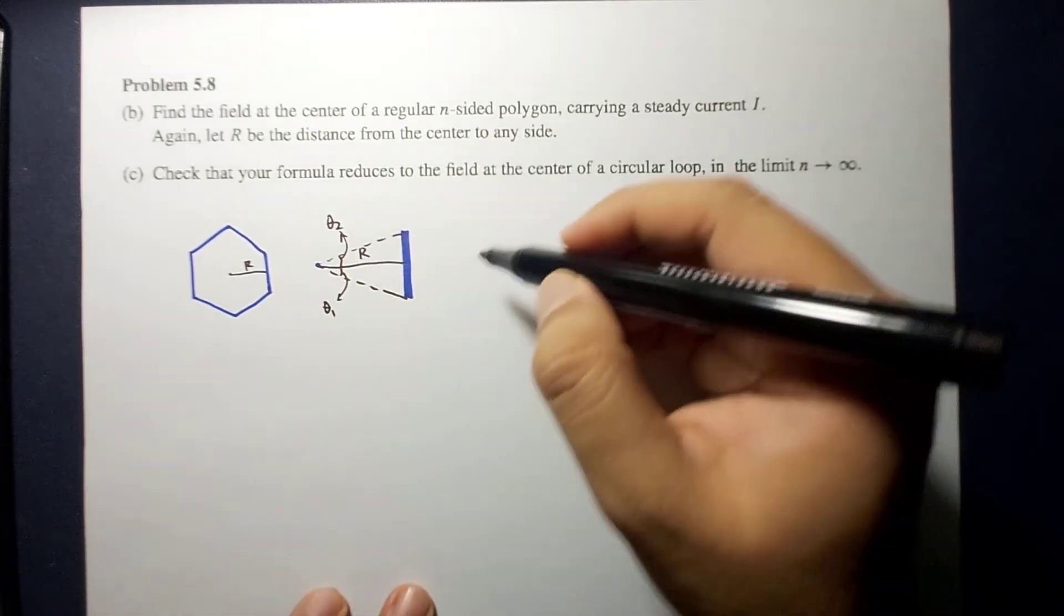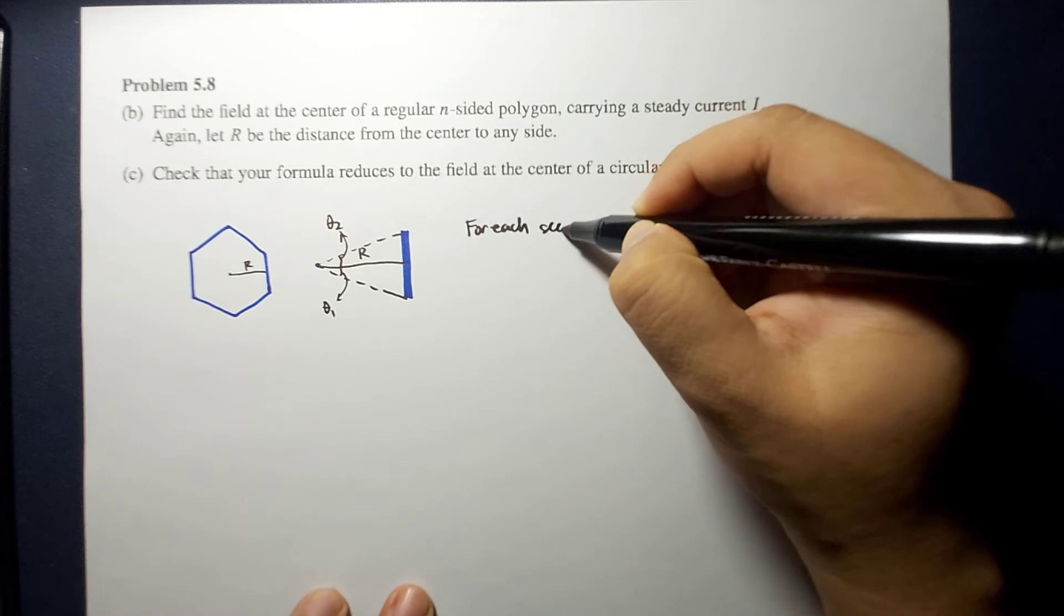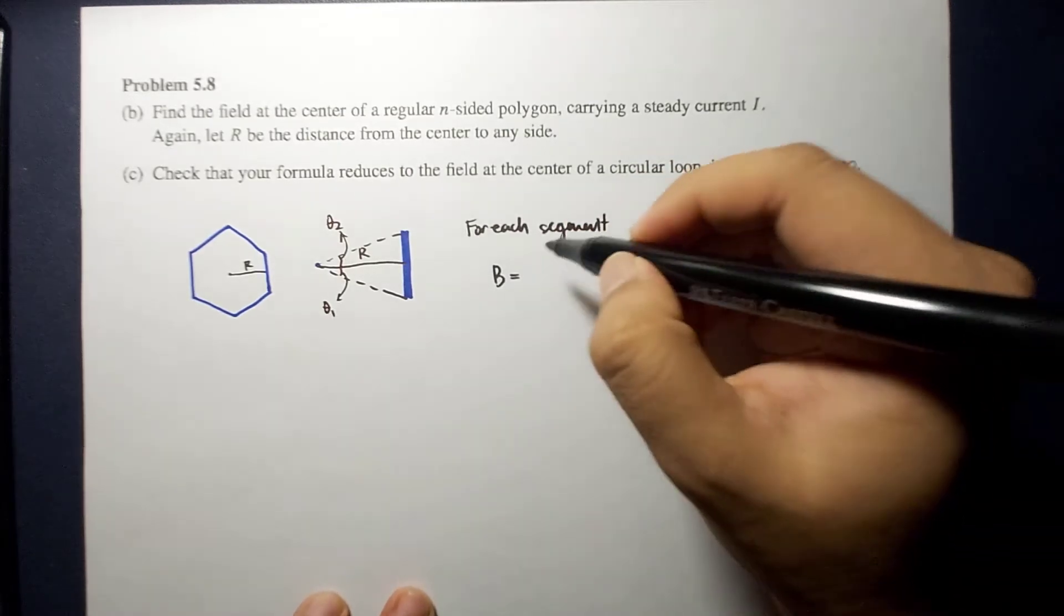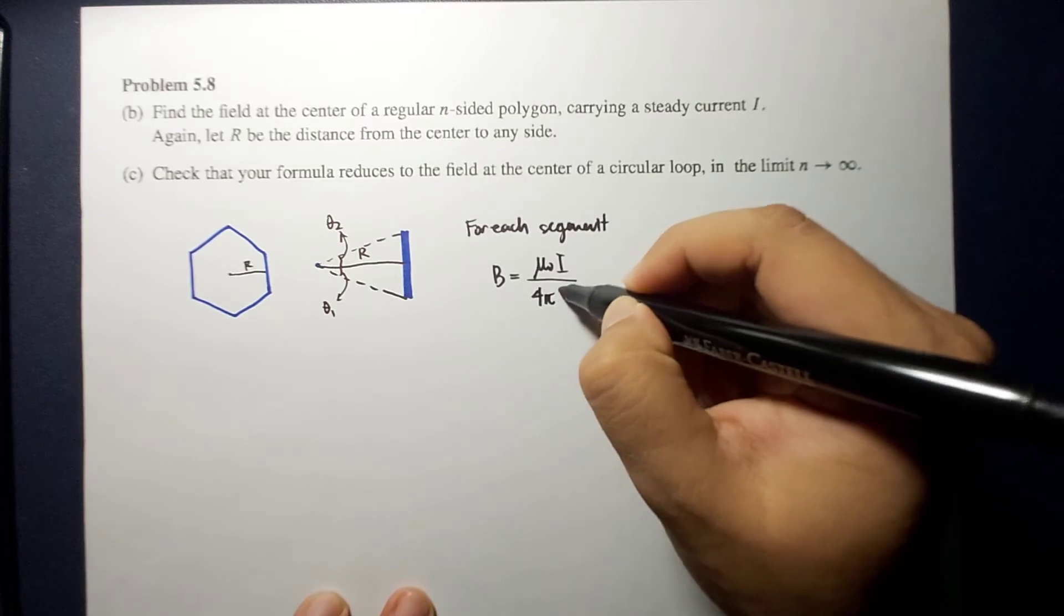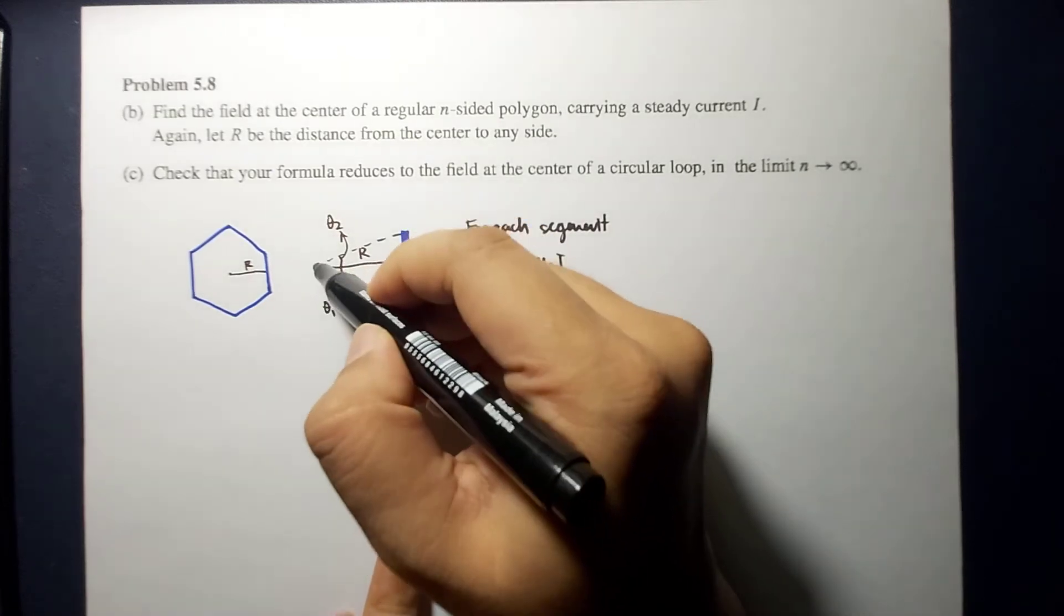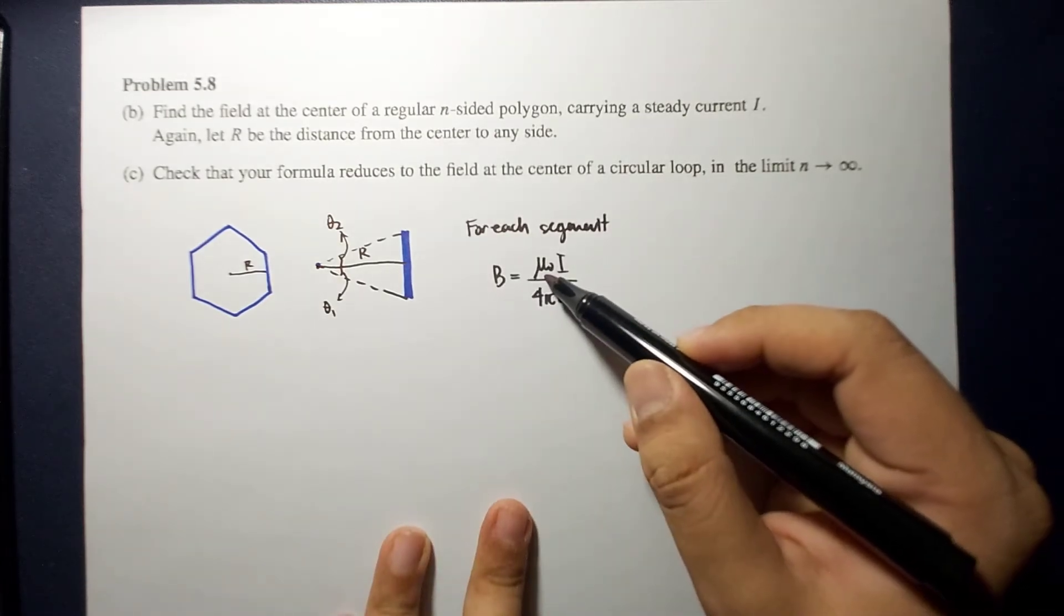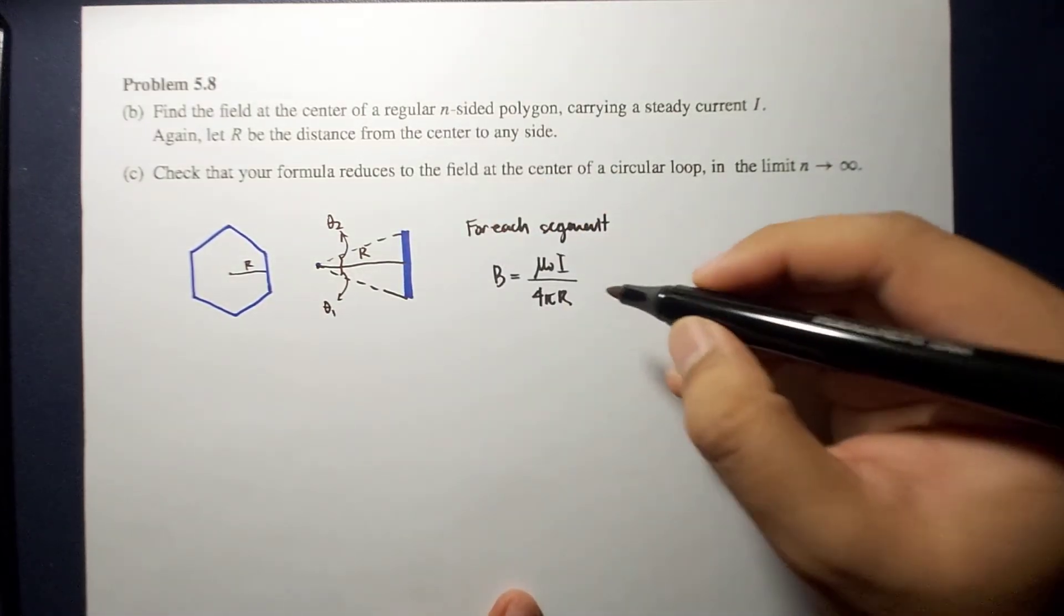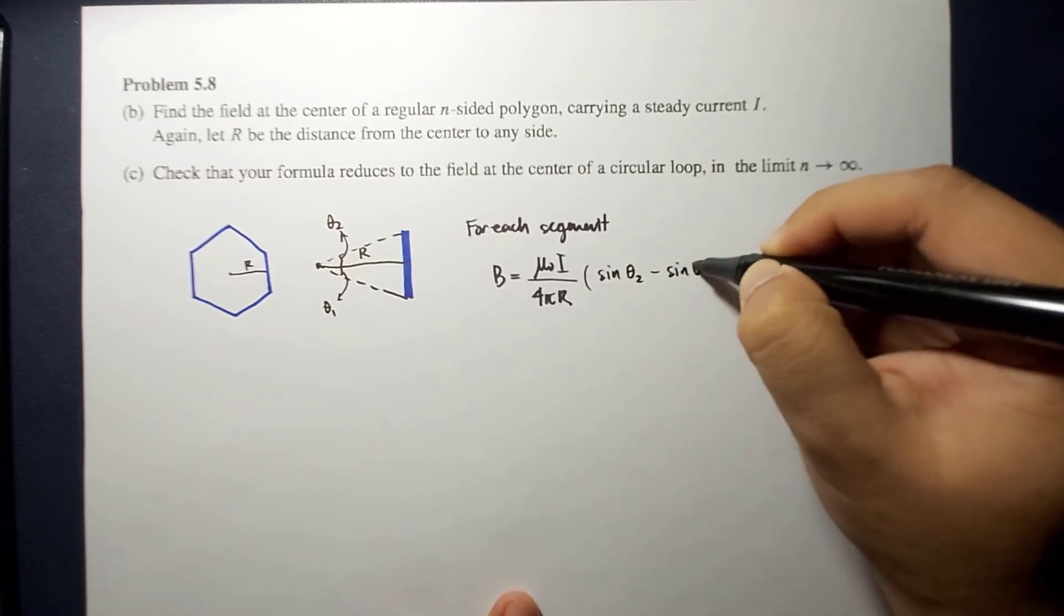So we know that for each segment, the magnetic field is given by mu naught I over 4 pi r. Because R is the distance from your point that you want to calculate your magnetic field. Mu naught is your permeability of free space, and I is the current on the line segment. And this is multiplied to sin theta 2 minus sin theta 1.